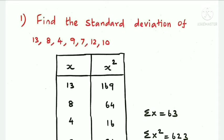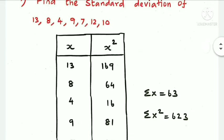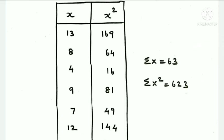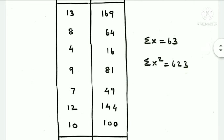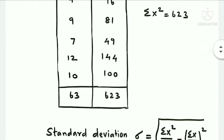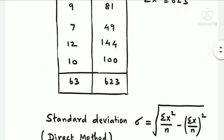When finding standard deviation, the data is arranged column-wise. One column is x for the data set, and the next column is x squared. The summation of x squared is equal to 623.